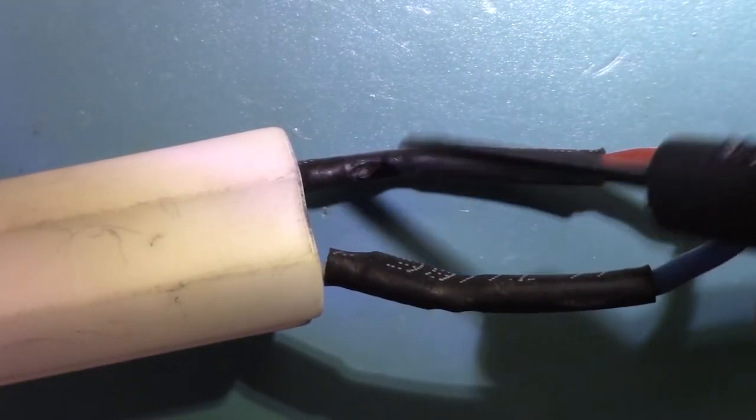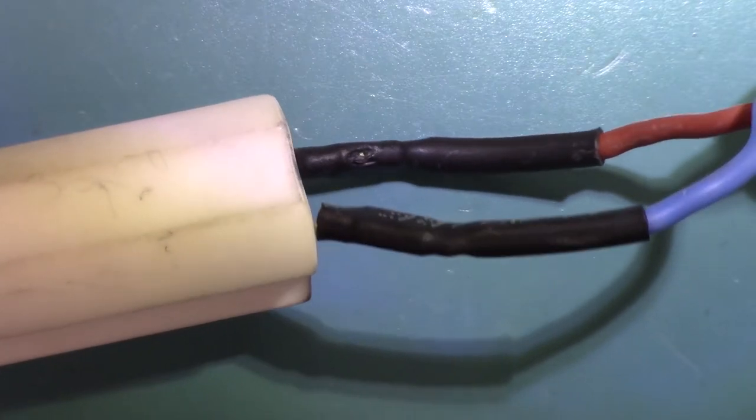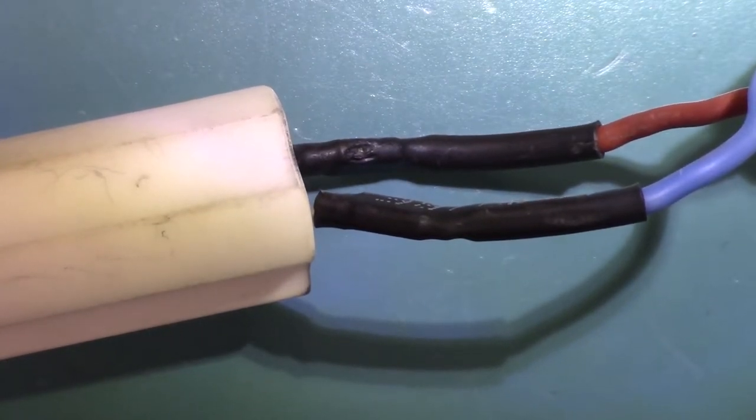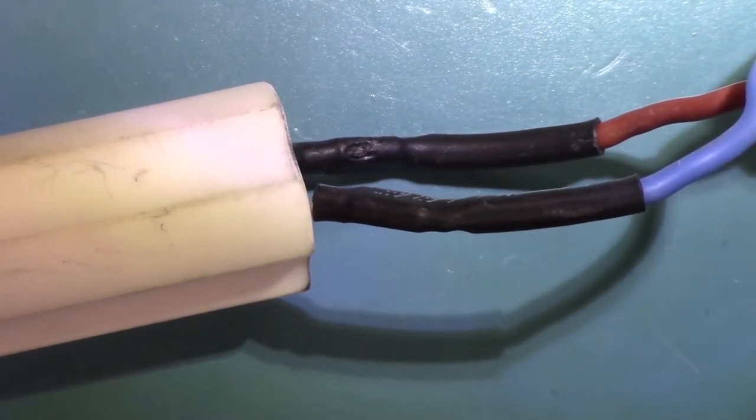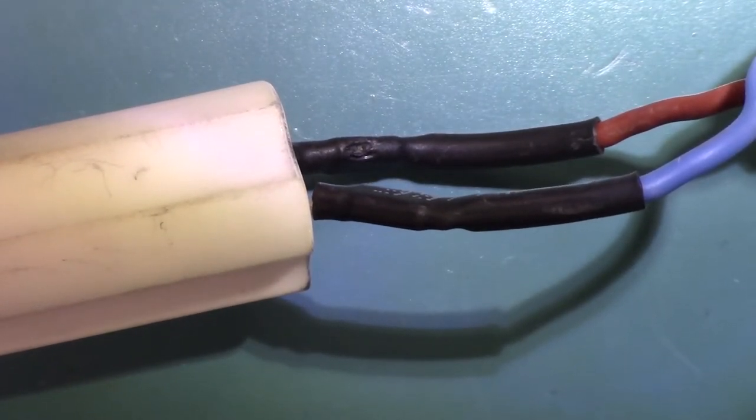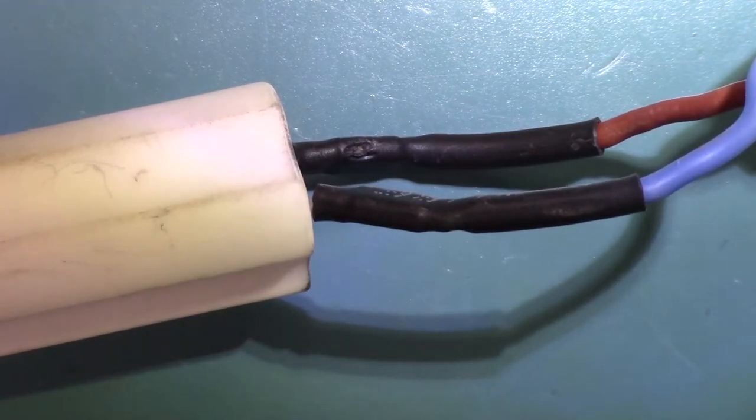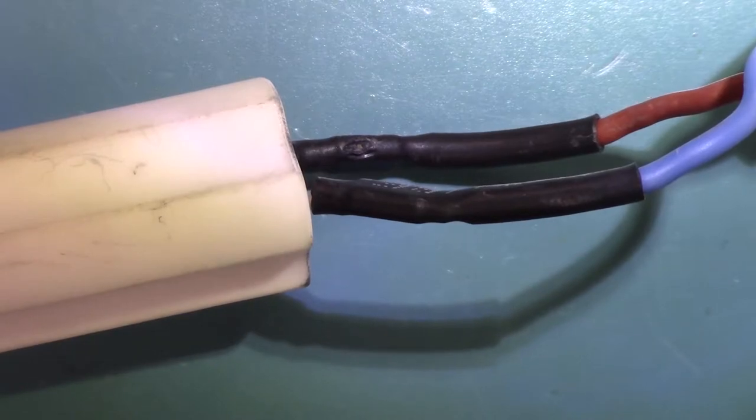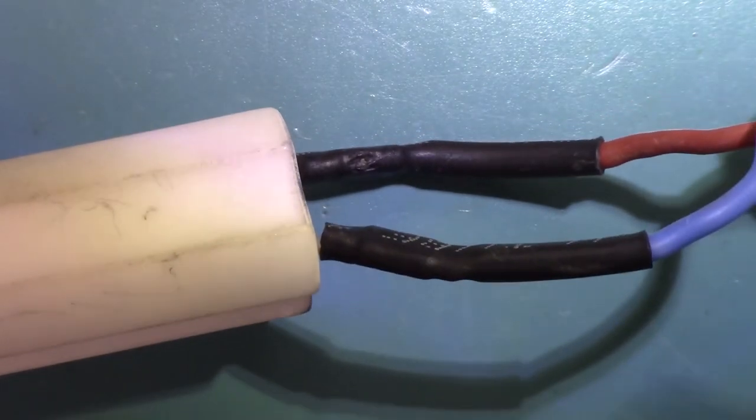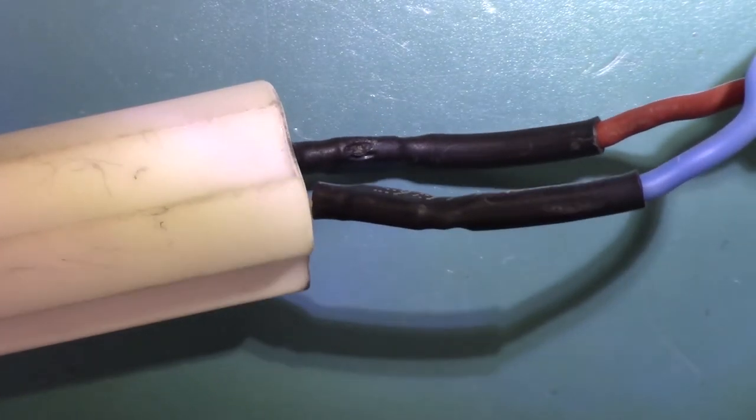And that is probably what is causing the GFCIs to pop. Because it will detect that short. It's not enough to throw the breaker, but it'll detect that short and it will trip the GFCI. So it's doing its job. So yeah, we've got a bit of a problem with that.